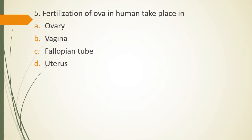Question 5, fertilization of ova in human takes place in, what is the location of fertilization in humans? Option A, Ovary, Option B, Vagina, Option C, Fallopian tube or Option D, Uterus. Fertilization of ova in humans takes place in, the correct answer is Option C, Fallopian tube.